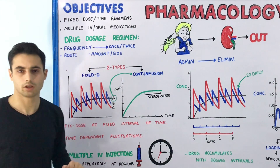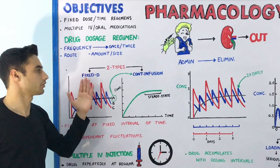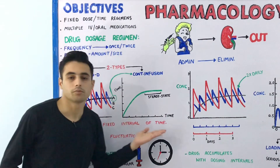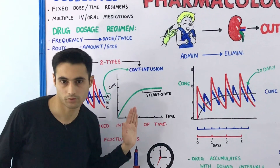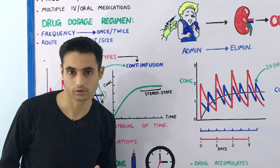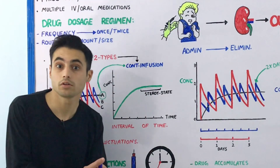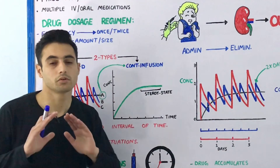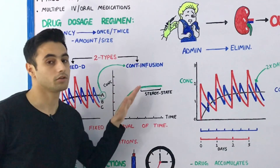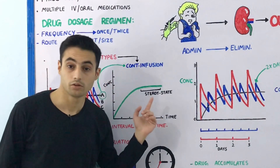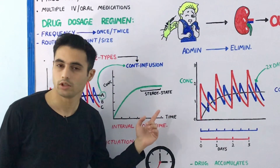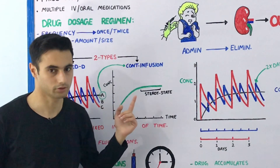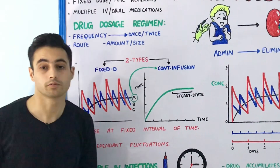The drug dosage regimen is of two types: the continuous infusion type and the fixed dose type. In the continuous infusion type, as discussed in the previous video, time is on the x-axis and concentration of the drug is on the y-axis. A constant amount of medication continuously infuses into the systemic circulation with no interruption, so the concentration increases gradually until a steady state is achieved.